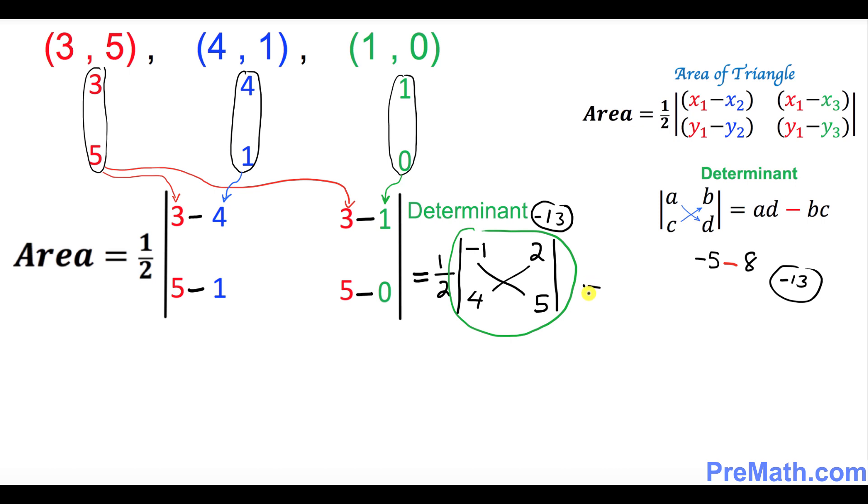So I can write this one over here. 1 over 2 times negative 13. That's going to give us negative 6.5.